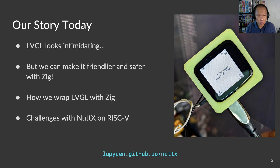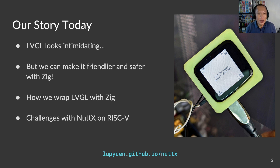Zig is a newer programming language that works well with C, and it looks suitable for creating LVGL touchscreen apps. We shall talk about wrapping the LVGL API with Zig and how it helps our developers.